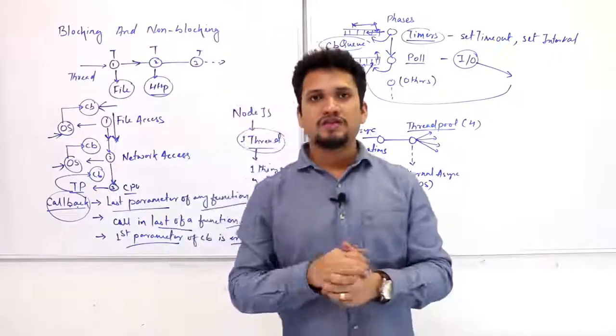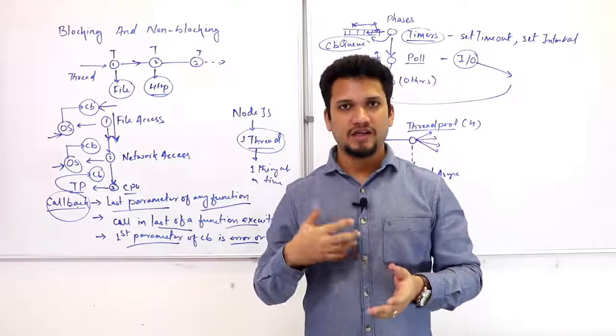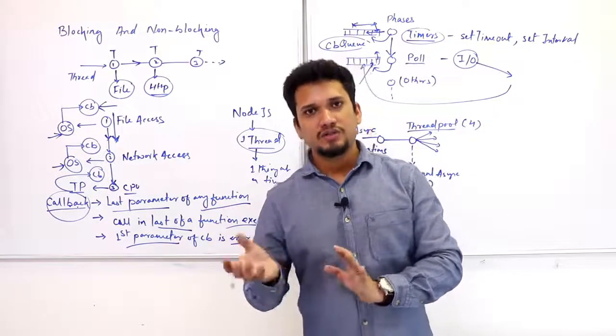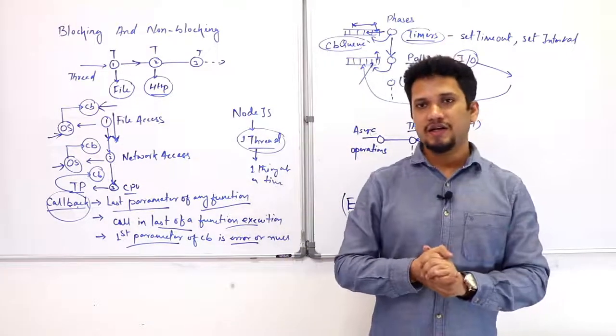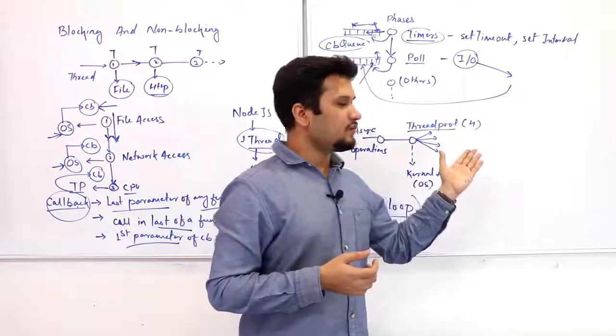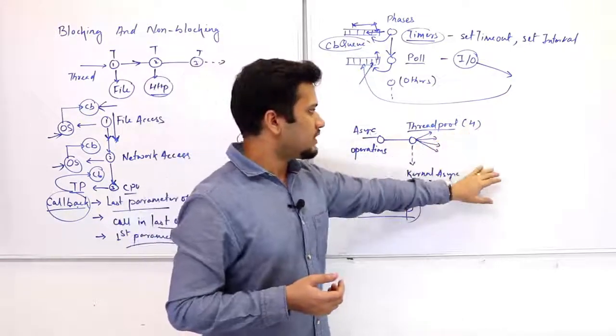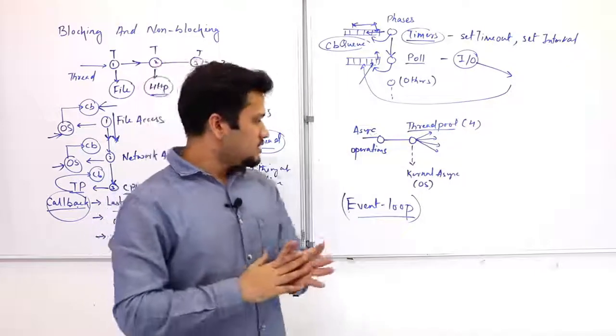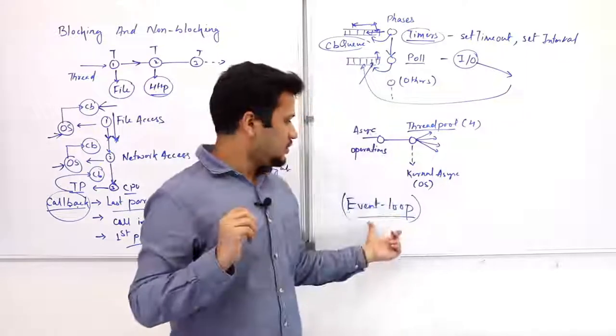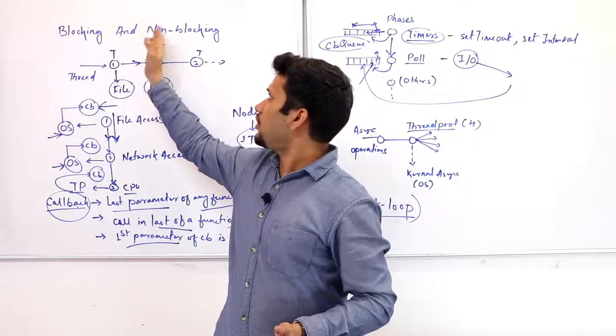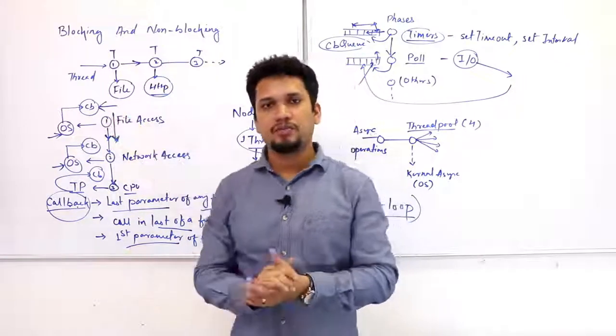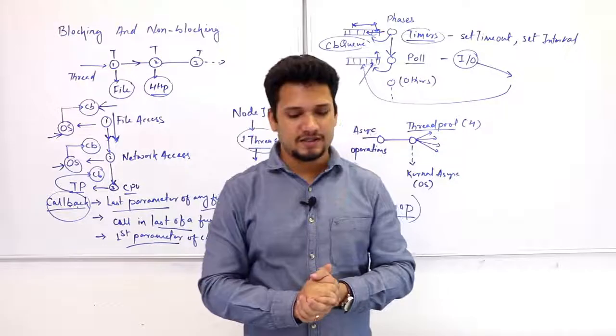Event loop is actually what makes NodeJS run really very fast and efficient and utilizes the system OS, for example, and the threads that OS can create, and also the thread pool. You can also change the thread pool default number of threads that are there in the thread pool. So I hope you must have understood what is the event loop and how this blocking and non-blocking terminology actually means, and how the asynchronous operations are being performed by NodeJS.